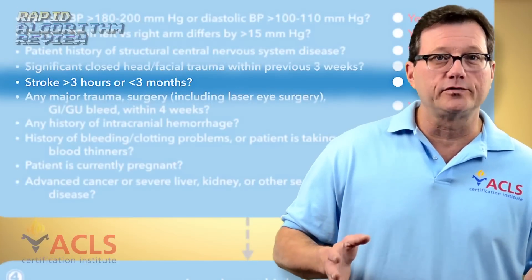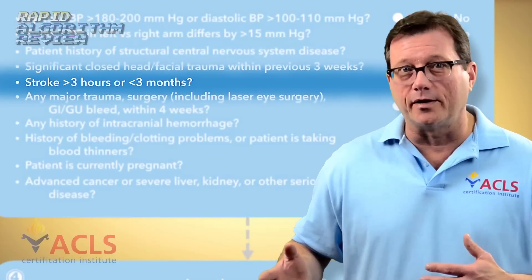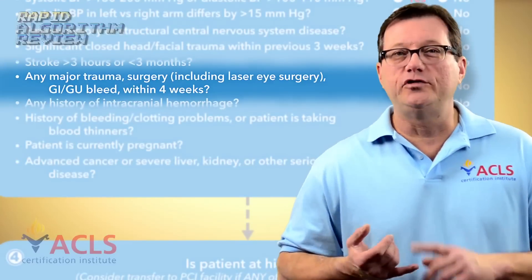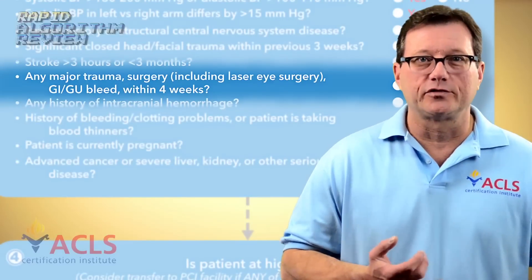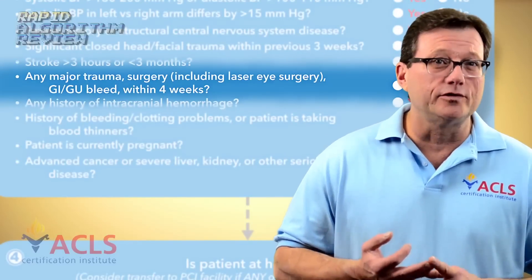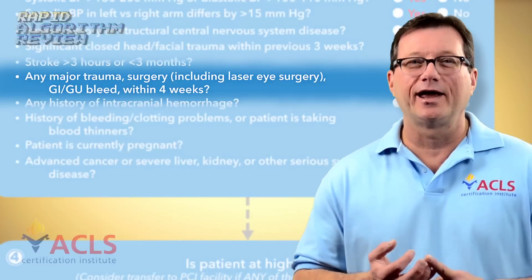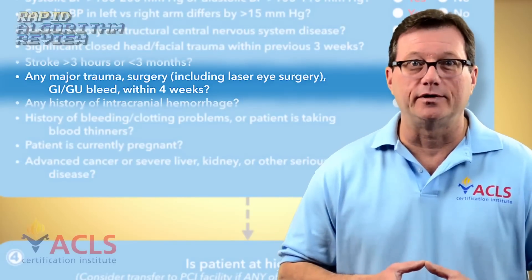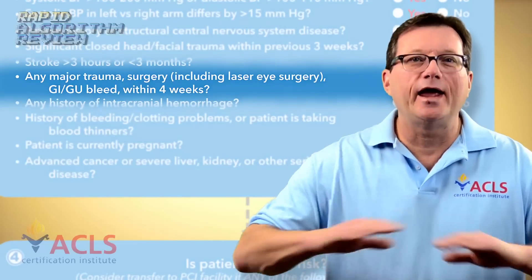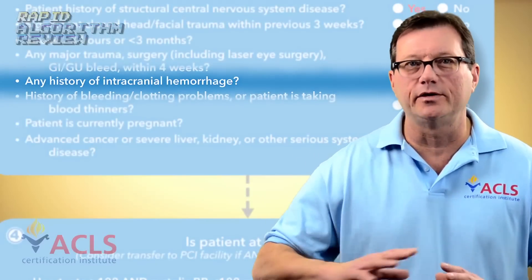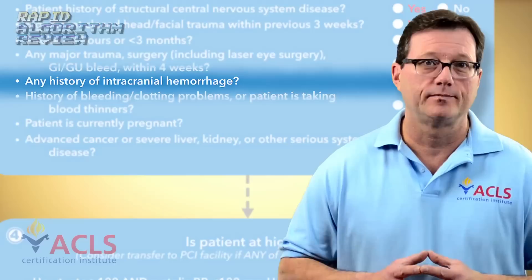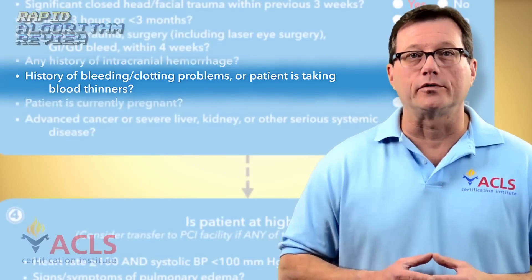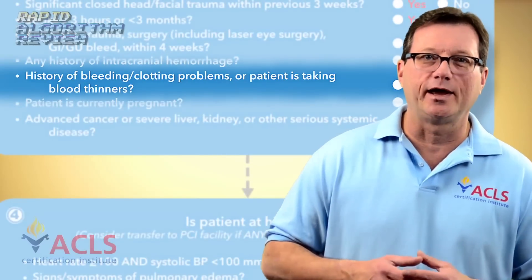Has the patient had a recent stroke — say greater than three hours but less than three months? That patient may not be a candidate for fibrinolytic therapy. Any major trauma, GI bleed, or laser surgery within the last month would probably exclude them. Again, major is subjective — get into that patient history and ask: does the risk outweigh the benefit? Any history of intracranial hemorrhage at any point in their life excludes them from fibrinolytic therapy. Does this patient have a history of bleeding disorders or are they currently taking blood thinners? They may not be a candidate for TPA.